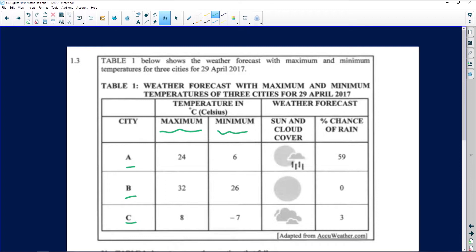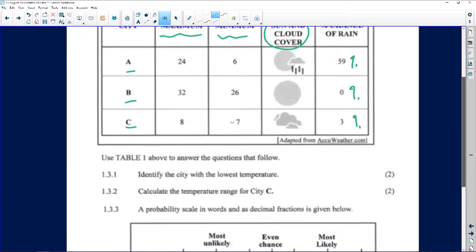Then we've got a nice cloud cover, sun and cloud cover situation happening over there, and we've got our pictures. Then we've got percentage chance of rain and we can see for City A the percentage there is 59%, and then 0% for City B meaning impossible, meaning nothing. For B you wouldn't even carry an umbrella on that day because you're not expecting rain whatsoever. And then C, we've got 3% which is very little.